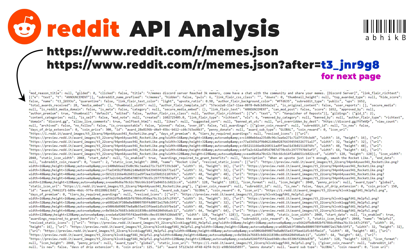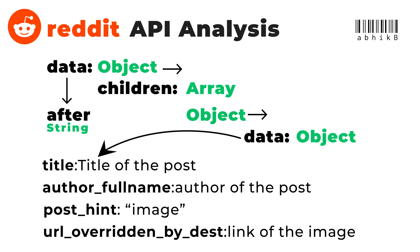Let's analyze the JSON returned. It returns a data object which has a children property that is an array. Each element in children is an object with a data property. That data object has a title, post_hint, and url_overridden_by_dest. The url_overridden_by_dest is the link to the image — this is very important. You can also have self_text which is the text content of the post.